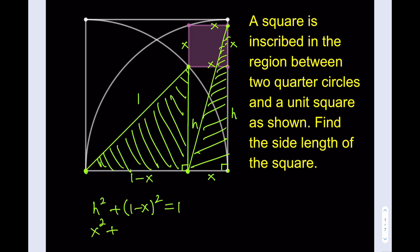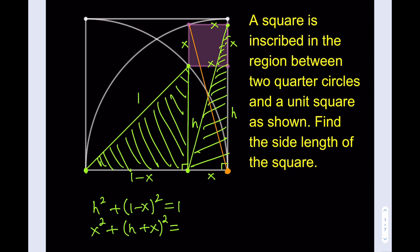So, the plan is to use these two triangles to solve for x. But let me tell you something. This is not going to be very easy. Let's see what we get from here. Let me use the first one first. That's going to look like h squared plus 1 minus x squared equals 1. And the second one tells me x squared plus h plus x squared equals... What about this length?